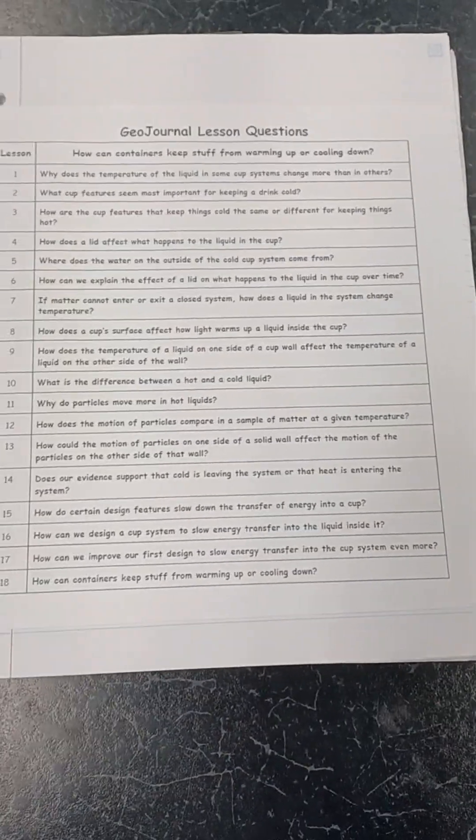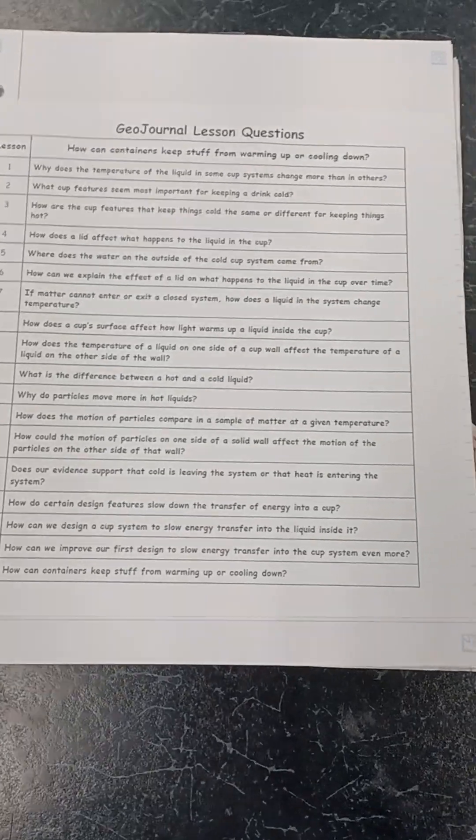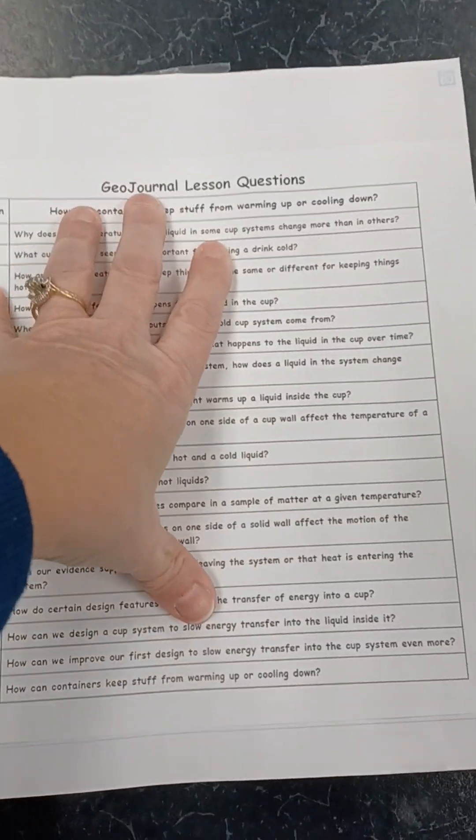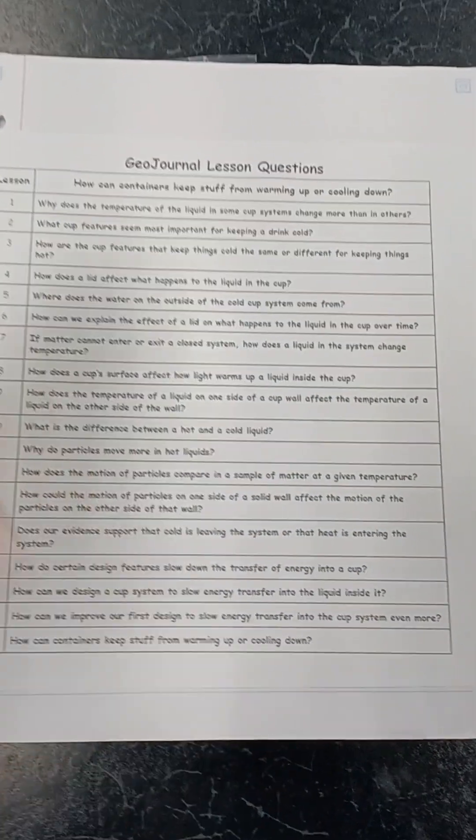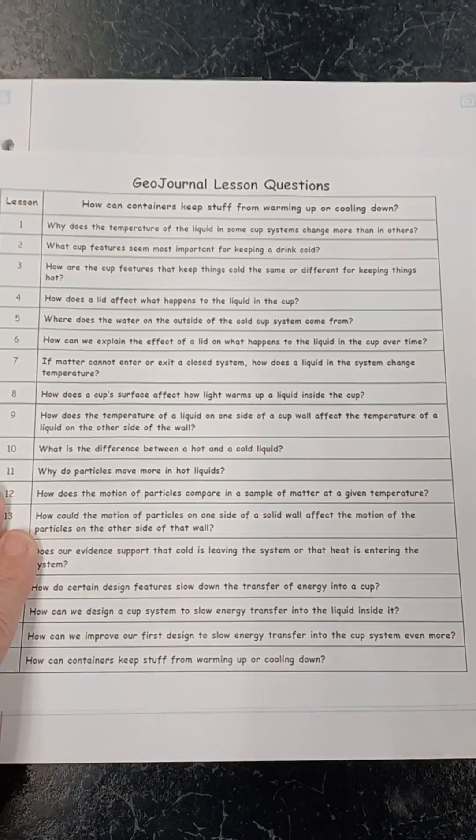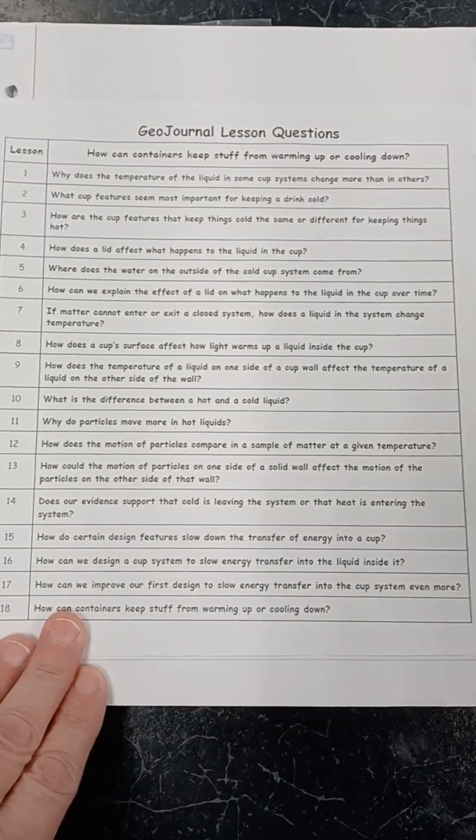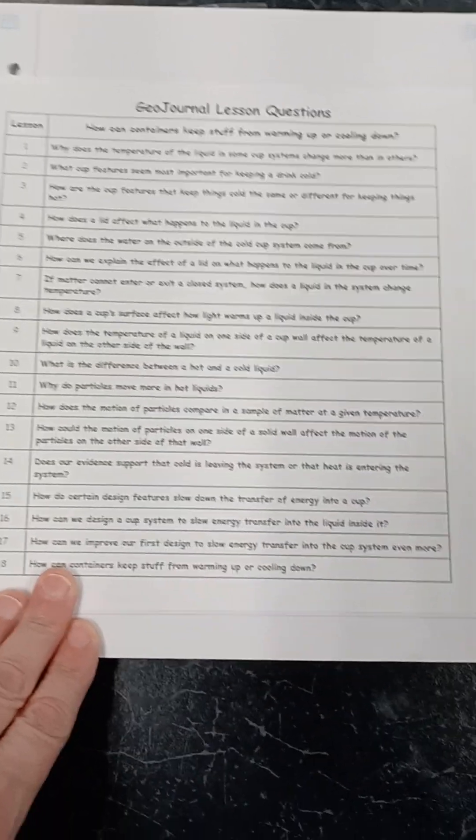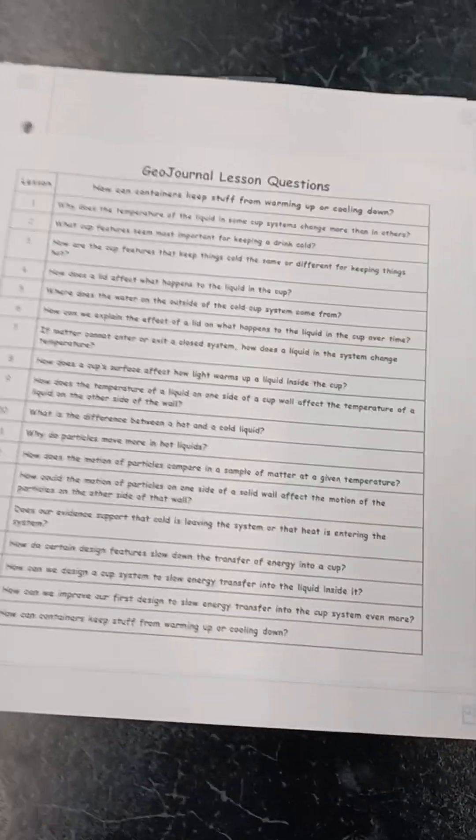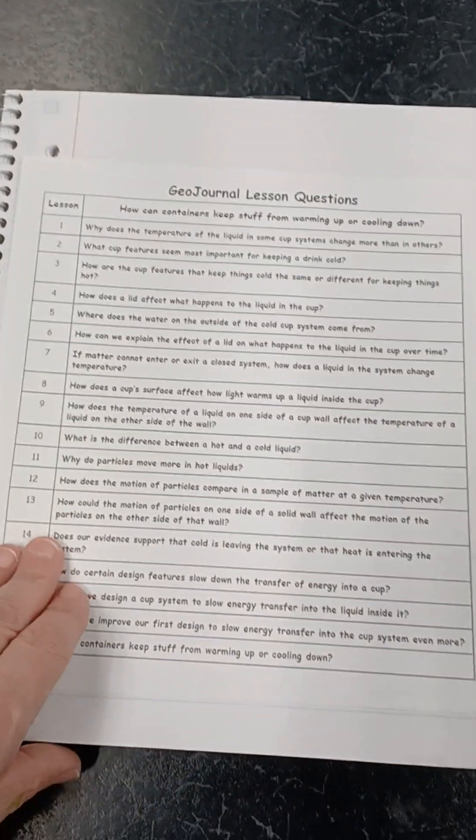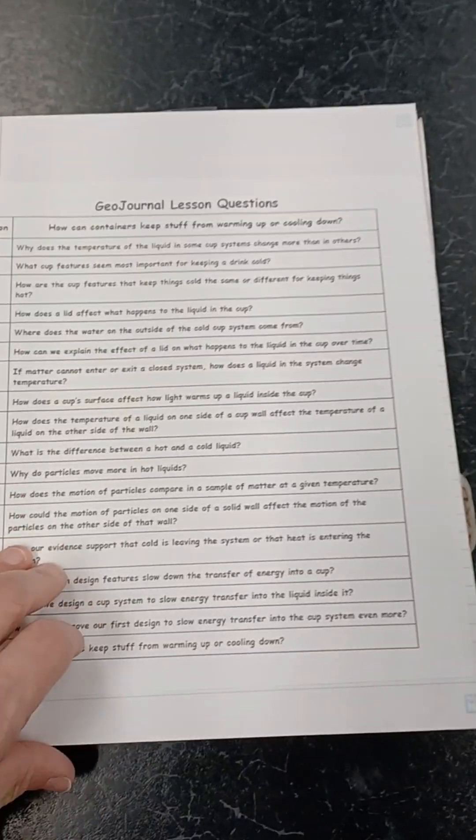We do a lot of stuff launched on their Chromebooks or their devices, but we also keep track of our learning. On each unit I give them what I call a geo journal because we do a lot of geoscience. I give them an outline of all the driving questions or the unit lessons. Because we're really learning target-based, our school really wants a lot of focus on that, so this is a way to do that.